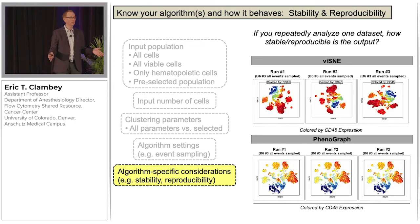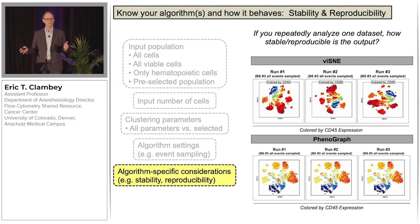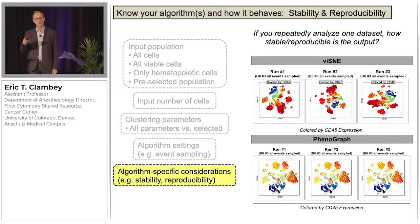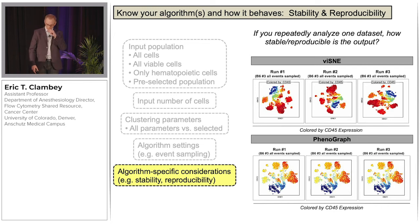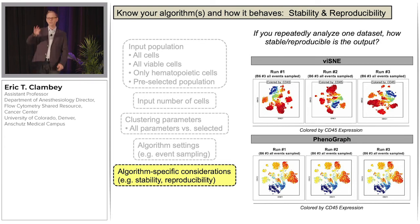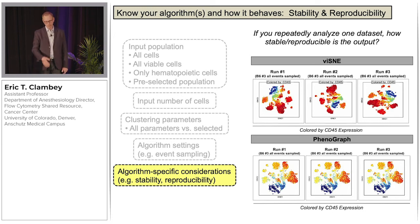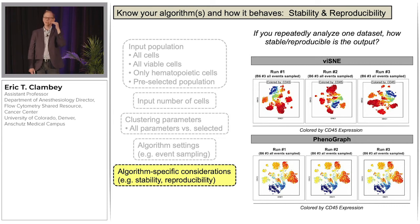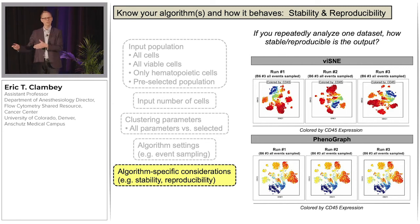Whatever algorithm you choose, I would strongly encourage you to understand its performance characteristics. If you take the exact same dataset, the exact same person, and run it multiple times, what does the data visualization look like? In one example, we took one dataset, ran it three times, and while the overall proportions of CD45-positive and negative cells are constant, the geometry of those cellular islands varies. In contrast, another algorithm gave the exact same data visualization across three independent runs. If you're analyzing data multiple times and getting different visualizations, this is a challenge for conveying results to the larger field.